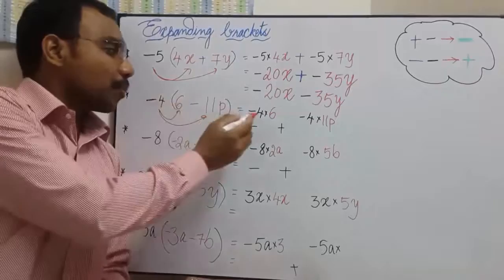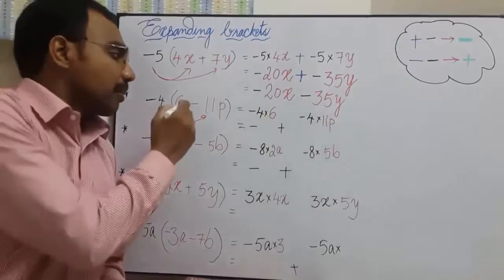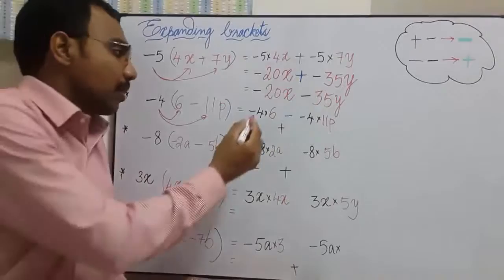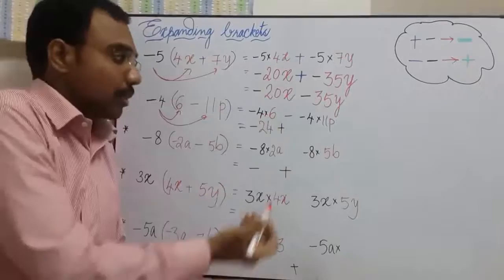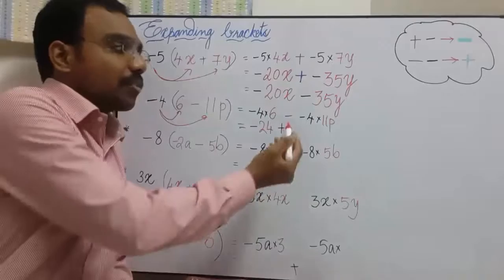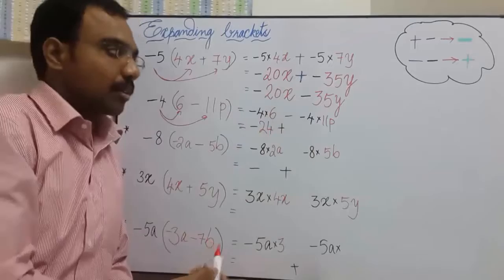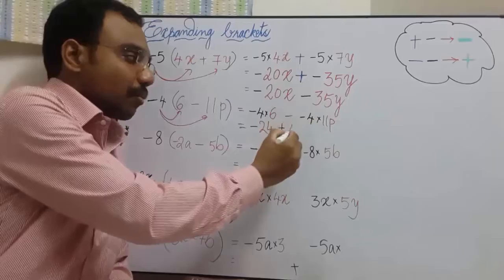So here minus 4 wishes 6 and minus 4 also wishes 11p. Since there is subtraction between these two terms, I'll put minus over here. Now 4 times 6, negative 4 times 6 is negative 24. Just now we have seen whenever you see two minus together, you can write it as plus. So 4 times 11 is 44p.